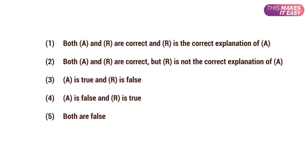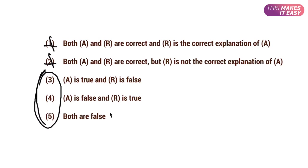Otherwise, option two is correct. Now if you are able to find an incorrect statement, you automatically knock out the first two options, because both first options say both are correct. The answer then falls in the last three options. If option five is not given, the answer will be in the remaining two options — you just need to find which one, A or R, is incorrect, and you will get the answer very easily.